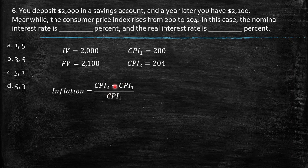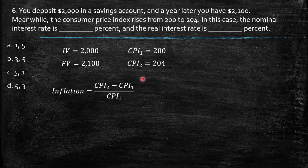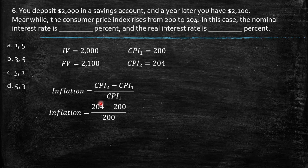So you just replace the value, and then you have 204 minus 200 over 200. Then you end up with 2%, so this is the value of the inflation.